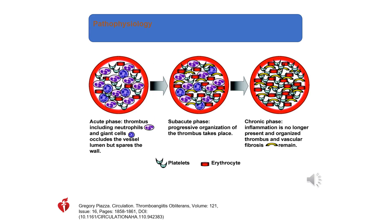Regarding the pathophysiology of Buerger's Disease: Phase 1, or the acute phase — thrombosis occurs in small and medium-sized vessels, and inflammation in this phase spares the vessel wall. The thrombus is characterized by polymorphonuclear leukocyte aggregations, micro-abscess formation, and multinuclear giant cells. In the second phase, the sub-acute phase, the thrombus shows decreased hypercellularity with frequent re-canalization of the occluded vessel lumen.